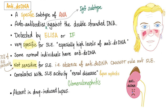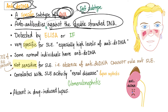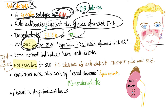After this introduction, let's talk about today's topic: anti-double-stranded DNA. It's an IgG autoantibody — and since DNA lives in the nucleus, anti-double-stranded DNA is a specific subtype of ANA, which makes perfect sense. These autoantibodies against the double-stranded DNA are detected by ELISA or immunofluorescence. It is very specific for lupus, especially when levels are high.